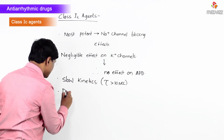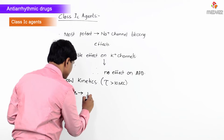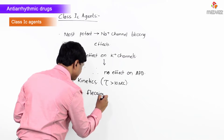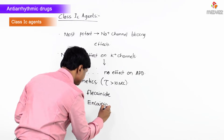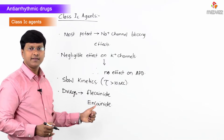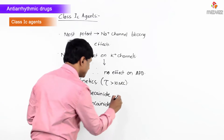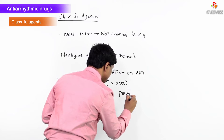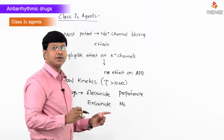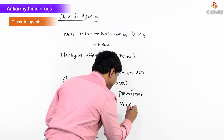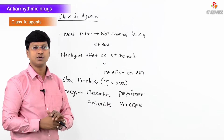The drugs in Class 1C include flecainide, propafenone, and morisazine. These are the antiarrhythmic drugs belonging to Class 1C.